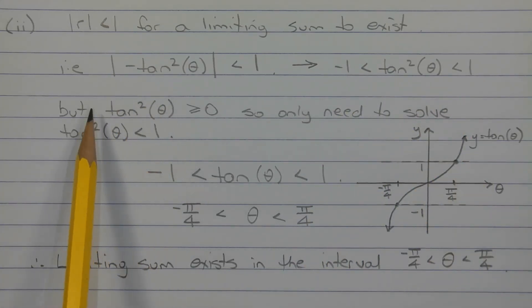Now since tan squared theta, by virtue of the fact that it's squared, is greater than or equal to 0, we only need to solve the inequality tan squared theta less than 1.